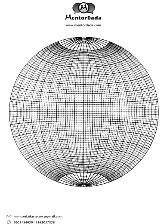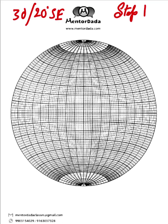So step one, here we are given the plane to be 030 slash 20 degrees southeast. It means the strike is 030, this 20 degree is the dip amount and the dip direction is towards this southeast direction.